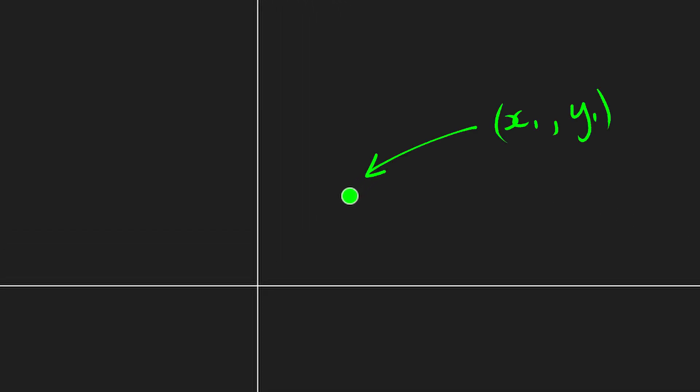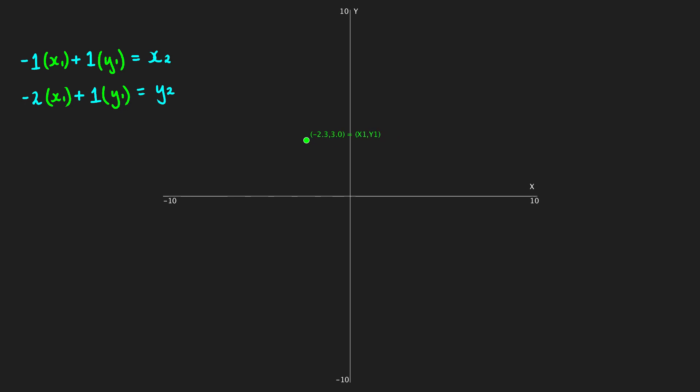And on that plane, we have our point x1, y1. And we pick two arbitrary linear equations to transform it onto another point, x2, y2.